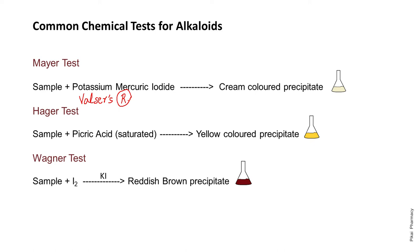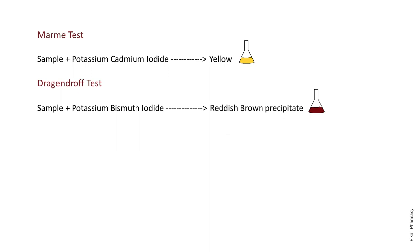Third comes the Wagner test. The reagent is iodine in potassium iodide solution. When the sample reacts with iodine in the presence of potassium iodide solution, it gives a reddish-brown precipitate, which indicates a positive Wagner test — meaning the sample is an alkaloid or contains alkaloid.